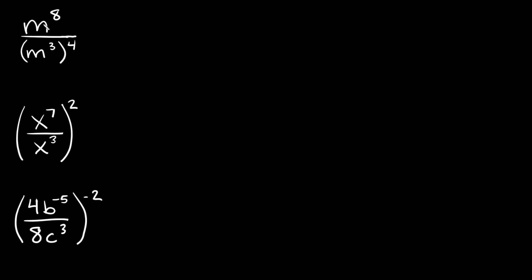m to the eighth is already as simplified as we can get it. But here we have m cubed in parentheses raised to the fourth, so we can simplify this more. Whenever you have an exponent raised to another exponent, all you have to do is multiply the two together. So 3 times 4 is 12, giving us m to the 12th power on the bottom.